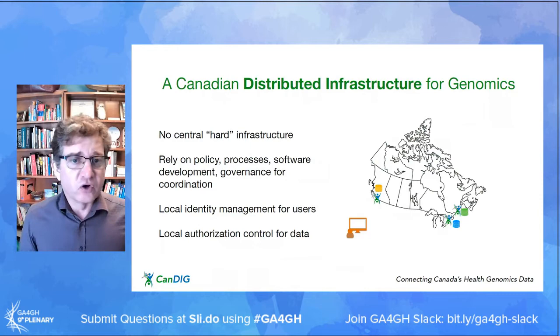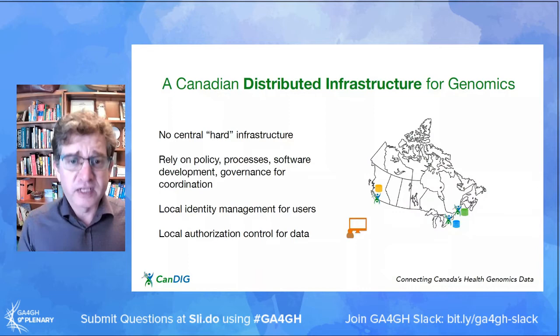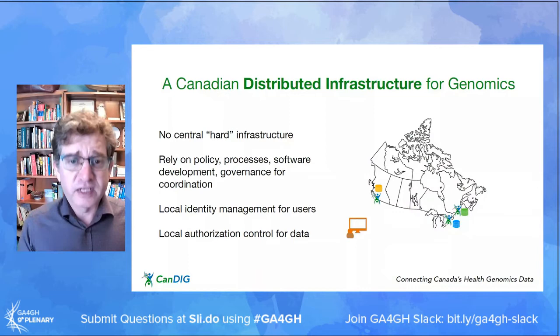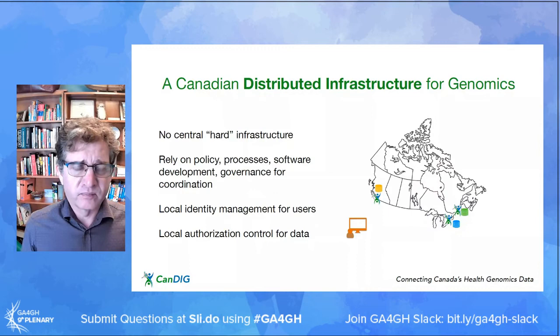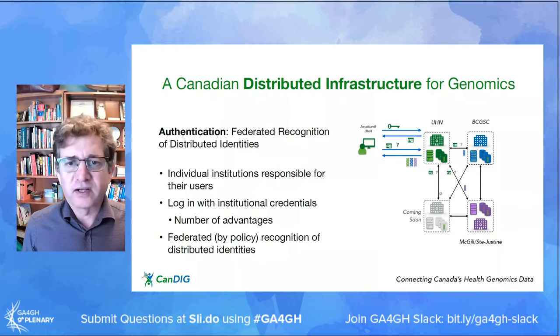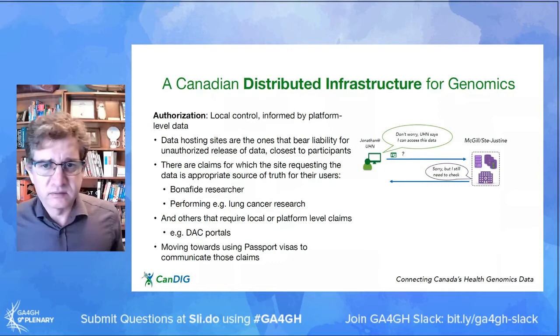We're distributed infrastructure — there's no central hardware infrastructure of any sort. The infrastructure that exists is coordination around policy, process, software development, and governance. For authentication, we use a federated recognition of distributed local identities. Individual institutions are responsible for identity management.